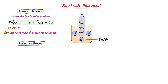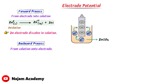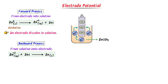In the backward process, the flow is from the solution towards the electrode. There are many zinc²⁺ ions in solution, while on the electrode there are negative charges. These positive zinc²⁺ ions are attracted by the negative charge on the electrode; as a result, zinc²⁺ ions gain electrons to become solid zinc atoms, which are deposited on the electrode. The oxidation state of the zinc ion decreases from plus two to zero, hence zinc is reduced. So in the backward process, zinc²⁺ ions deposit on the electrode and reduction occurs.